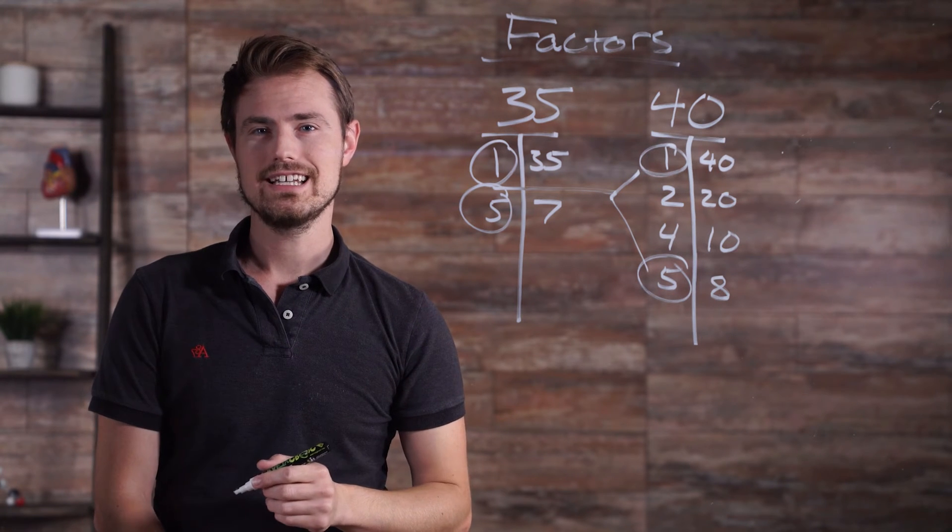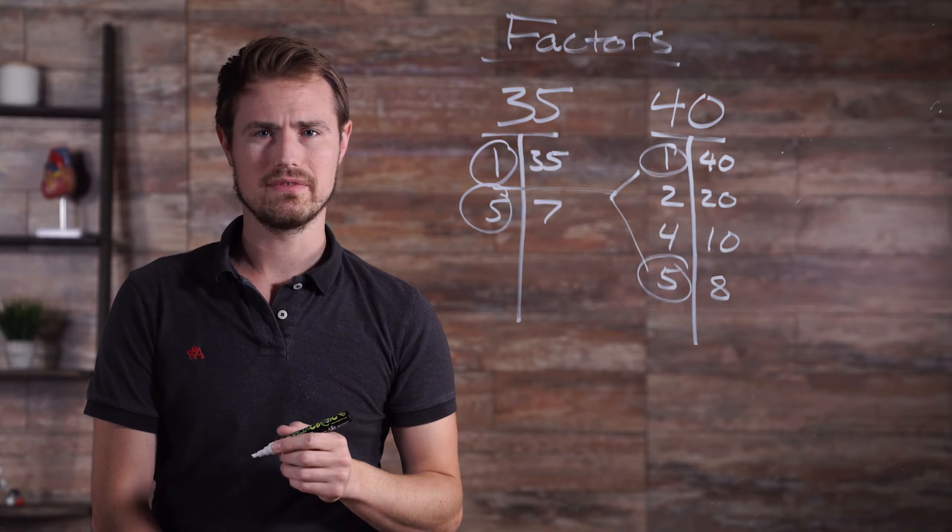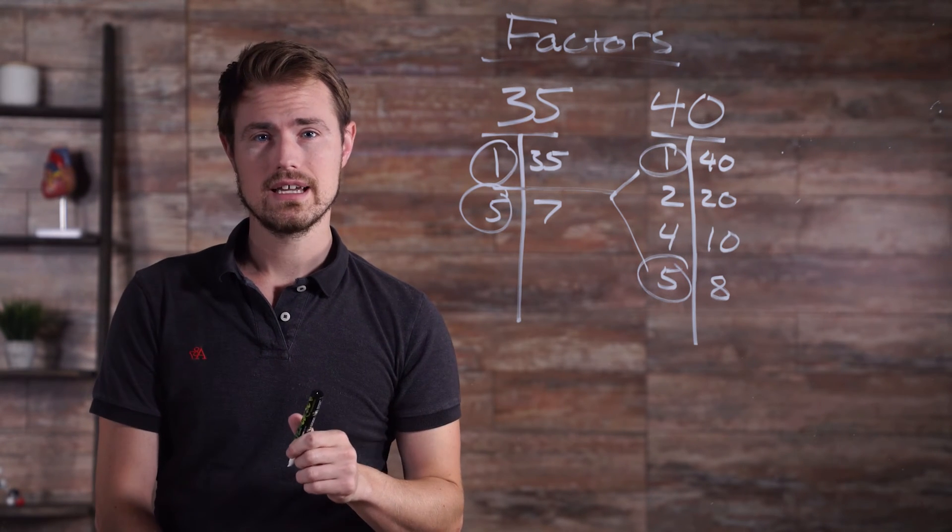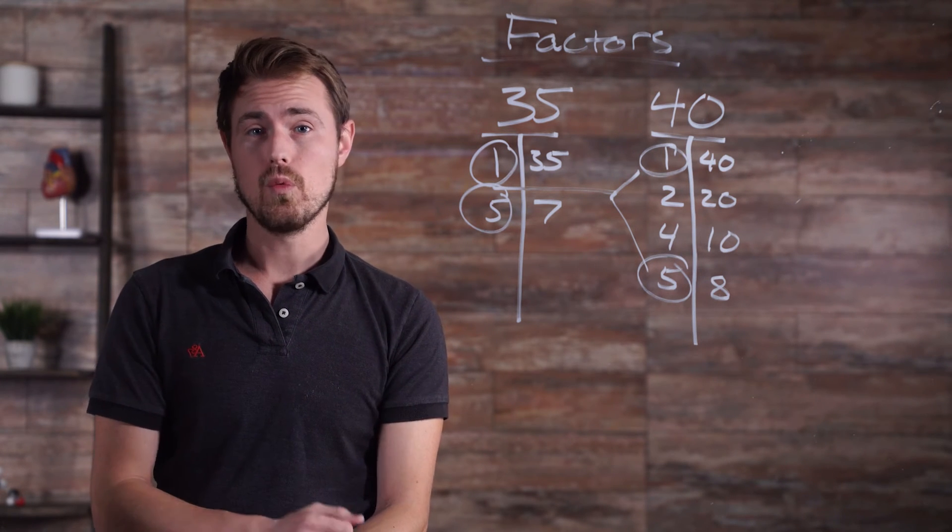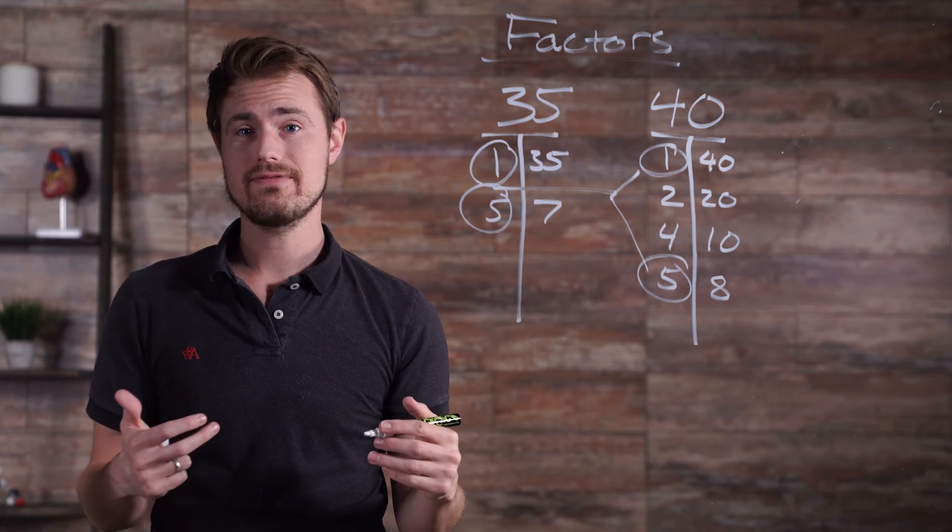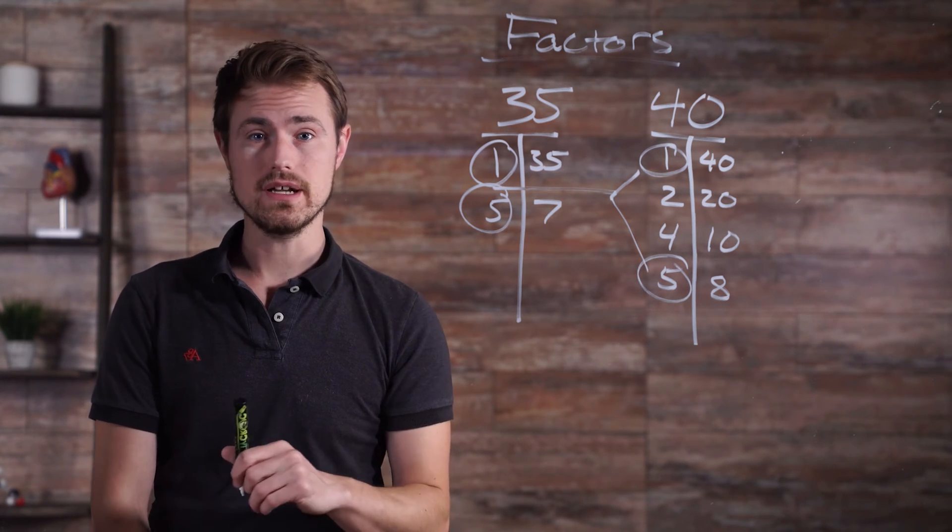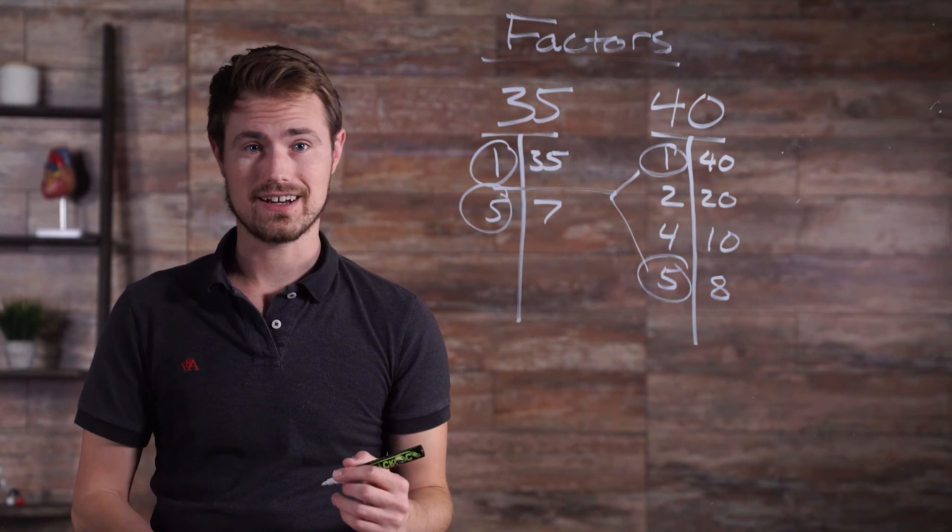The next type of factor is a greatest common factor. This is the highest value common factor. You look at the list of common factors like we have here and determine which number is largest. In the case of 35 and 40, 1 and 5 are the only factors that they have in common. And 5 has a higher value than 1. Therefore 5 is the greatest common factor.